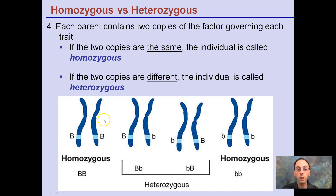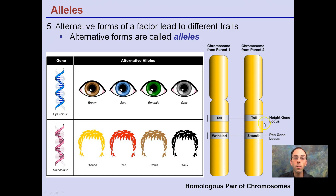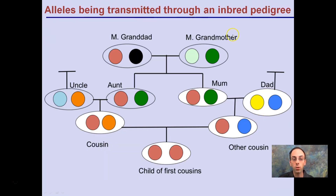If two copies are different, they're called heterozygous — a big B and a little B. Two little B's is also homozygous: homozygous recessive versus homozygous dominant. Alleles are alternate forms or factors that lead to different traits. We can inherit one from each parent — for example, alleles for tall genes, a wrinkled peapod, or a smooth one. Depending on which is dominant or recessive, that determines which is expressed. A pedigree, that family tree, lets us trace alleles transmitted through inbreeding history.